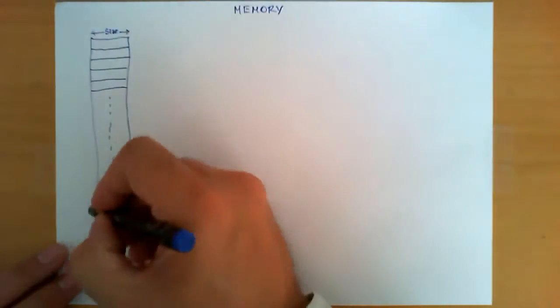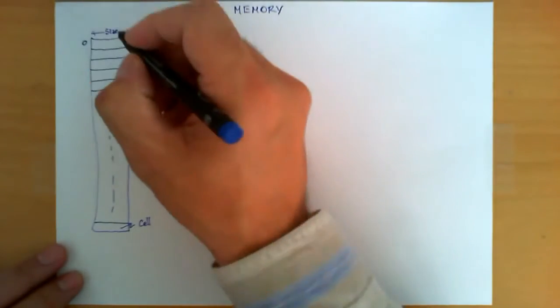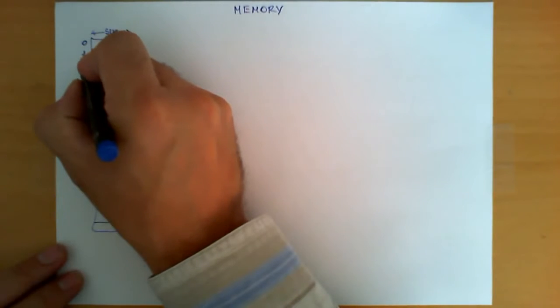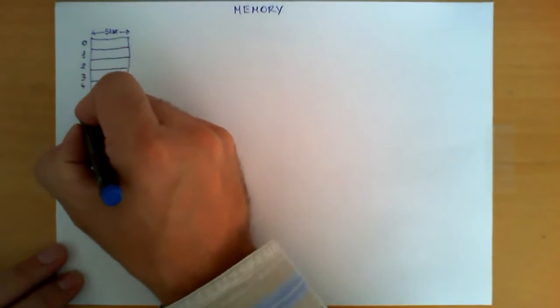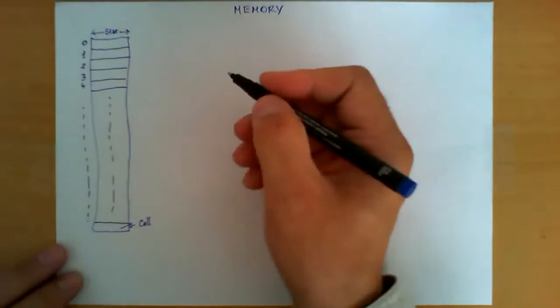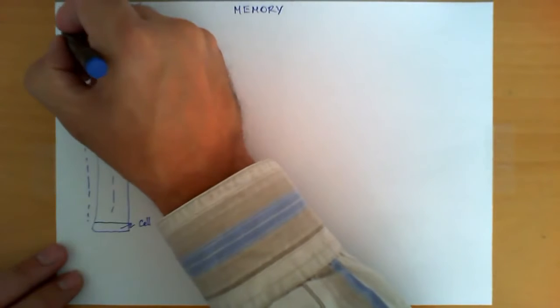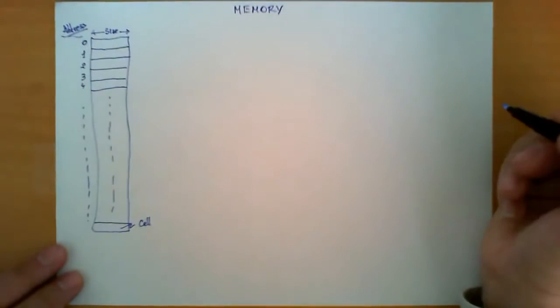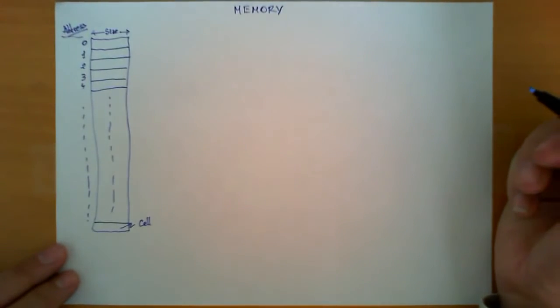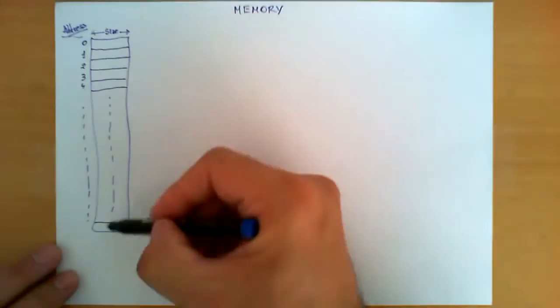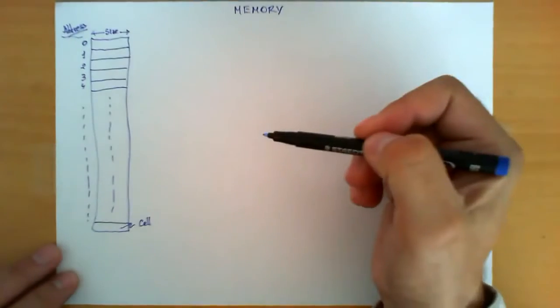The other property of memory is that all these cells have a number, starting from zero, one, two, three, four, and all the way down, and this number is called the address. This address is going to allow me to refer to each one of these cells by a number.